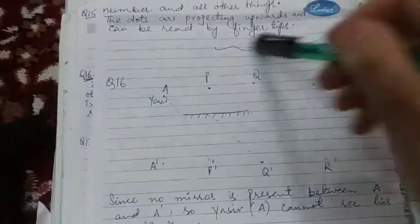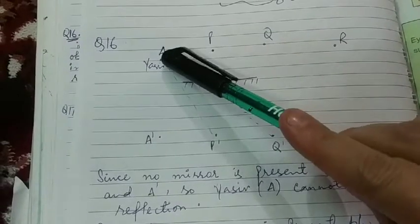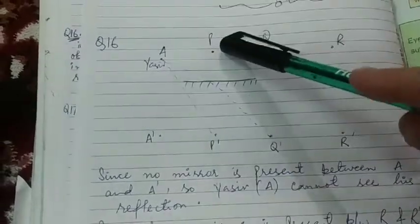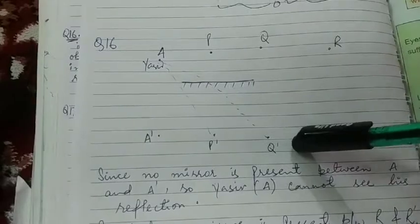If you could just see, I have redrawn this diagram in the notebook. A dash is the image of Yasir, P dash is the image of object P, Q dash is the image of object Q, and R dash is the image of object R.